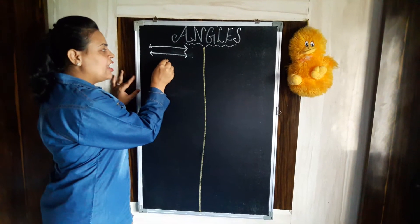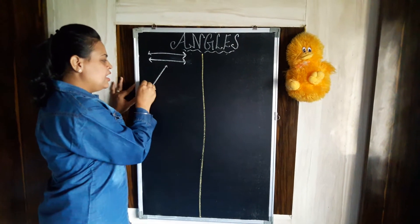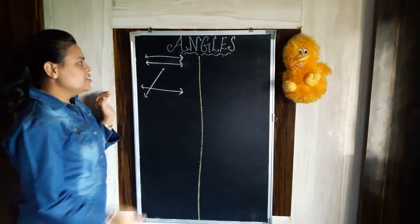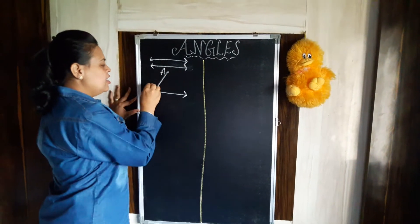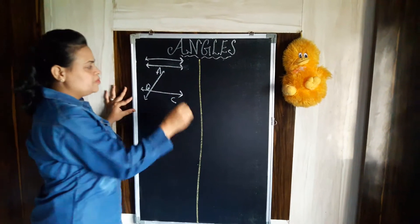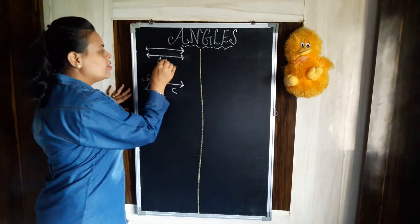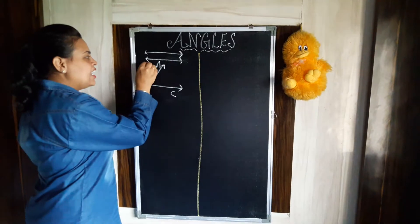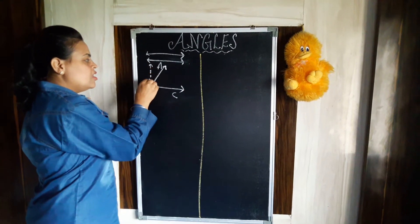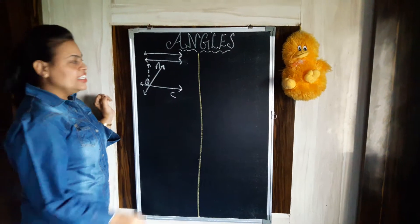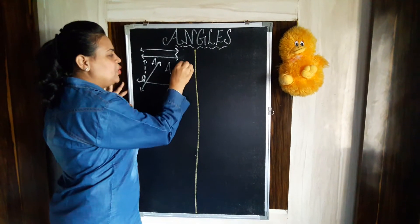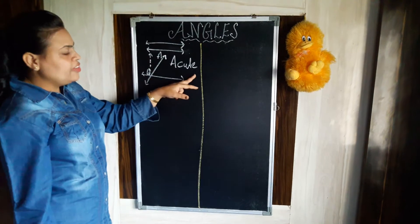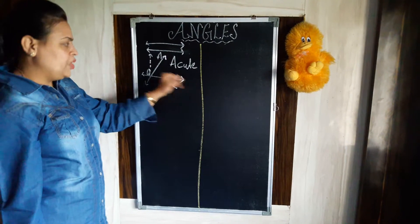If we want to form an angle, we need two lines that intersect each other. We name the points a, b, c. We have an angle ABC, but this angle is less than 90 degrees, so we name this angle as an acute angle. When an angle is less than 90 degrees, we name it as an acute angle.